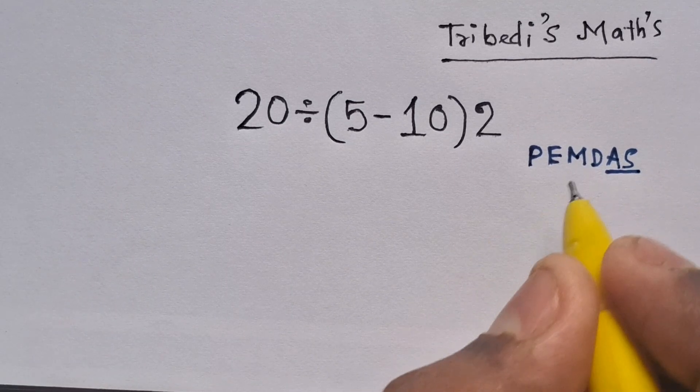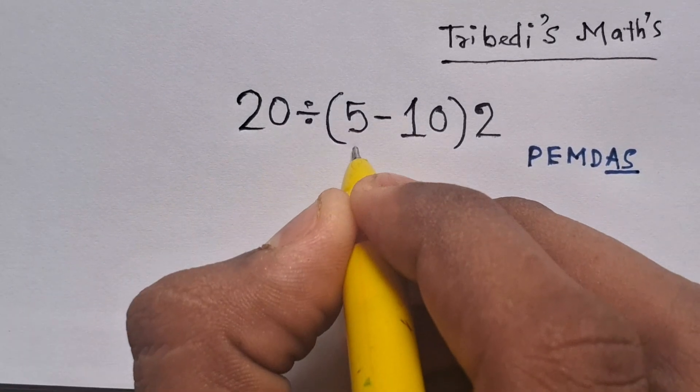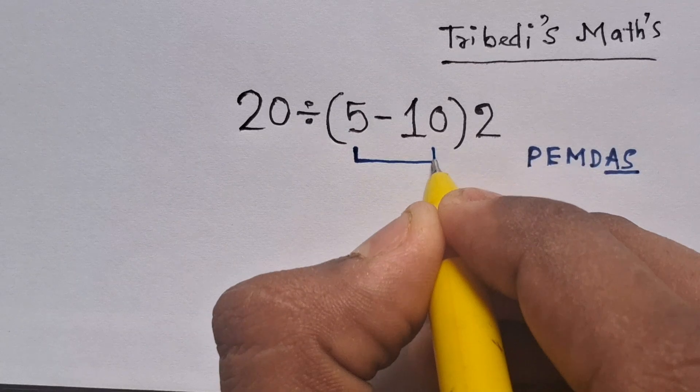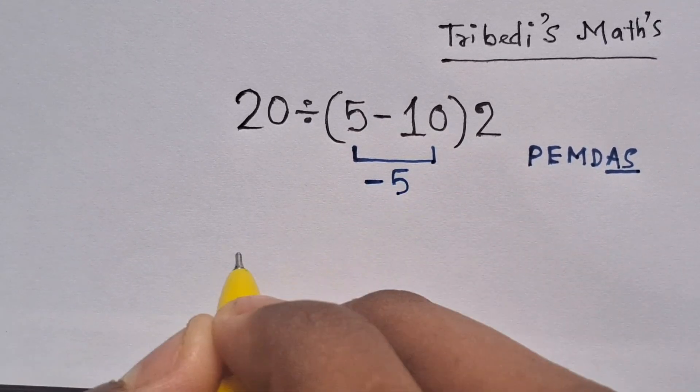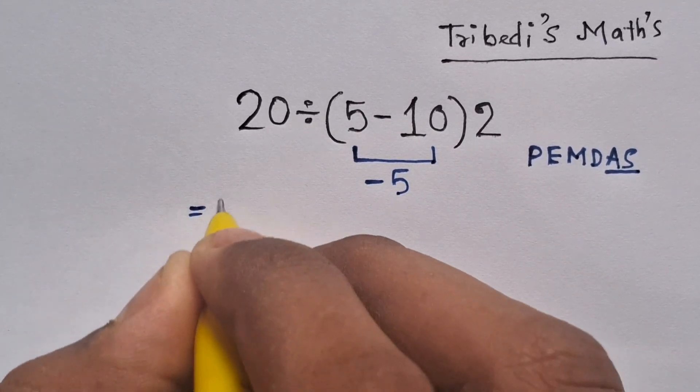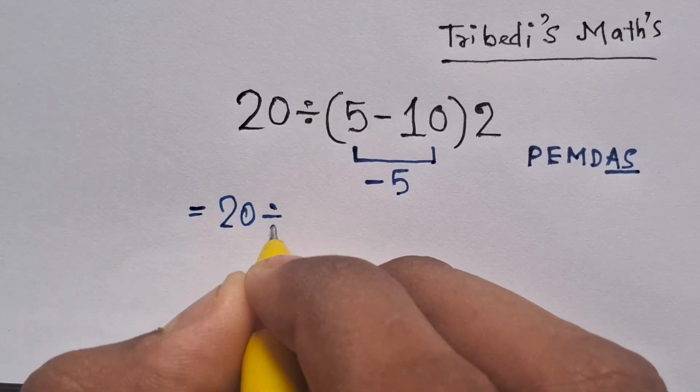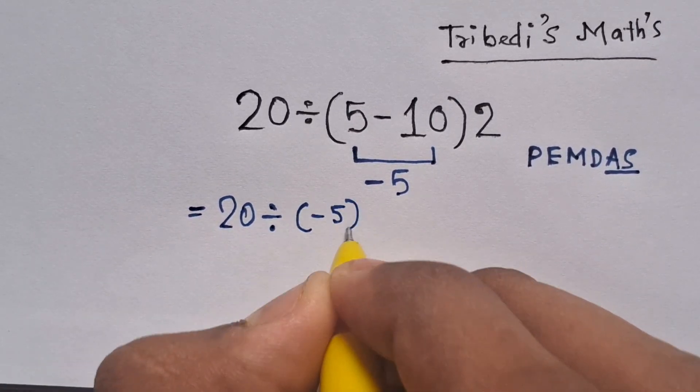So let's solve this expression according to the PEMDAS rule. First brackets or parentheses, so 5 minus 10 equals minus 5. Now the expression becomes 20 divided by minus 5 times 2.